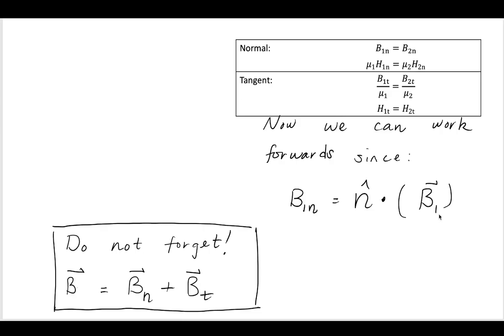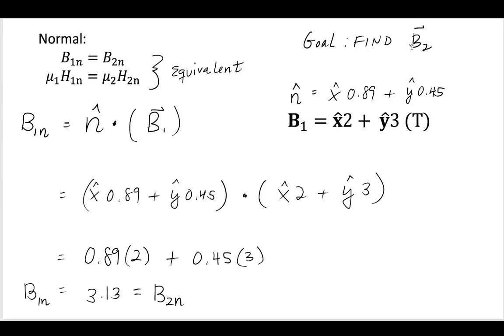So our goal is to find B2, flux B2, but we're given B1, and we just found this n-hat. So we should, we can now work towards getting this B1n, this magnitude, which we can see is going to start moving us towards finding components of B2. All right, so these two things are equivalent. Now if we take, and so we're going to, we can use that later on, but for now let's continue working with the flux only.